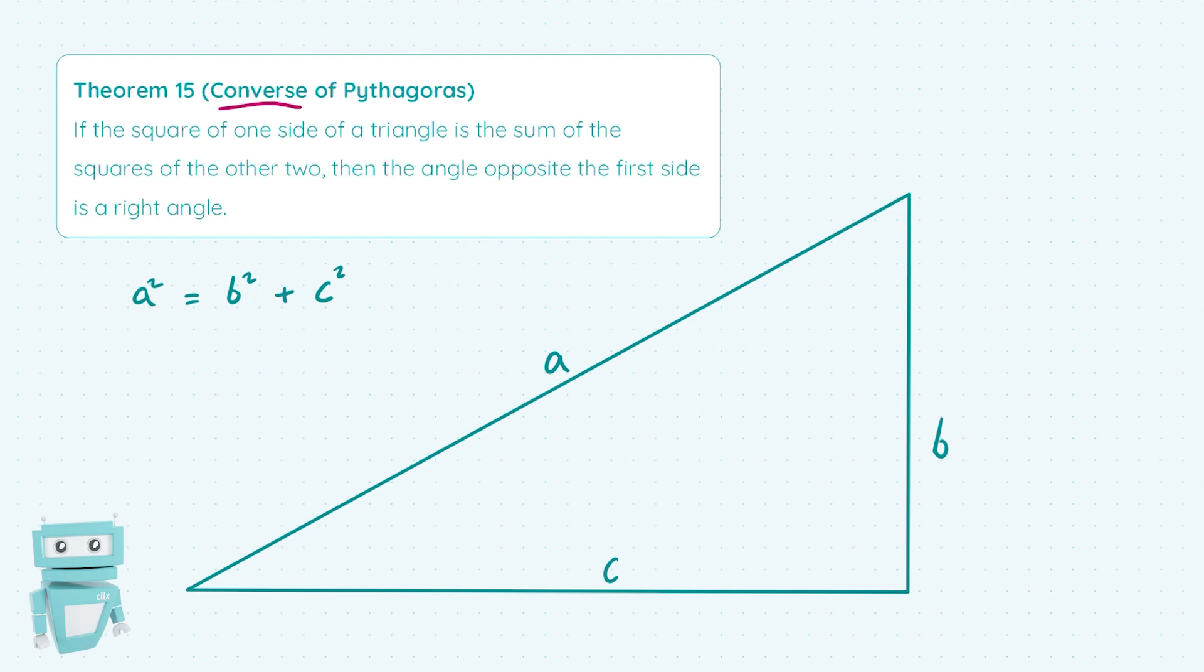And if we know that this is true we actually know a few things but the first thing we know for sure is that a is the longest side because it's clearly bigger than b and c and because when you square a it is equal to b squared plus c squared at this angle opposite a is in fact a right angle.